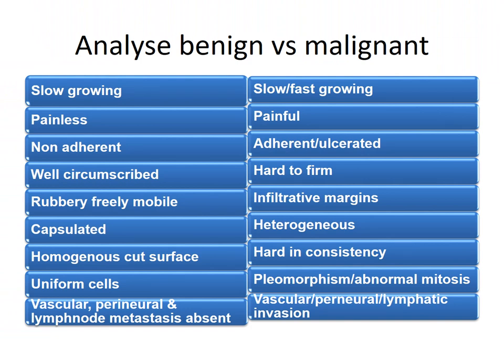Comparing benign and malignant tumours: benign are slow-growing, painless, non-adherent, well-circumscribed, rubbery and freely mobile, encapsulated, with a homogeneous cut surface and uniform cells microscopically. Malignant tumours are slow or fast growing, painful, adherent (with possible ulceration in the oral cavity), have infiltrative margins, are hard in consistency, with a heterogeneous cut surface, and show pleomorphism and abnormal mitosis microscopically. Vascular, perineural, and lymph node metastasis are absent in benign tumours but vascular, perineural, and lymphatic invasion are seen in malignant ones.